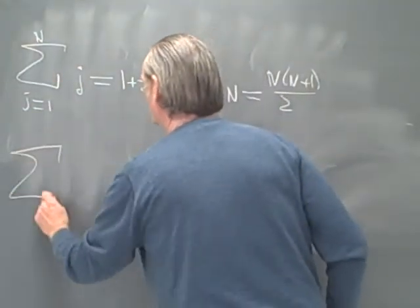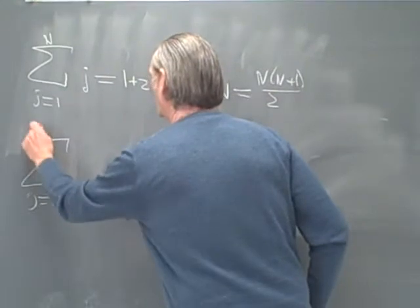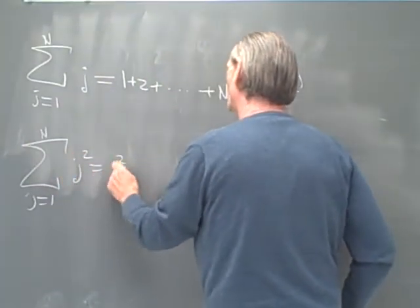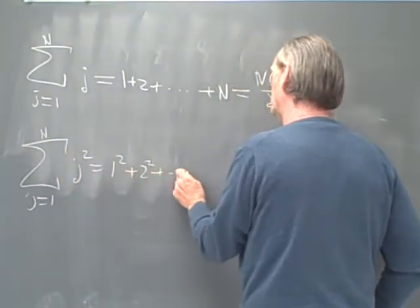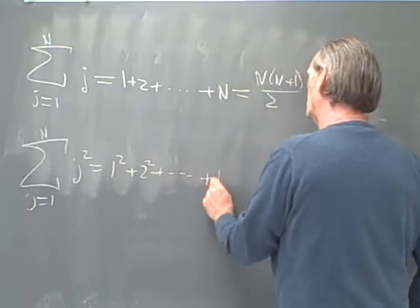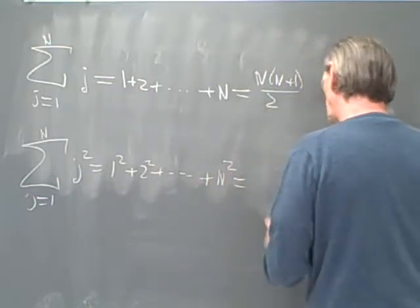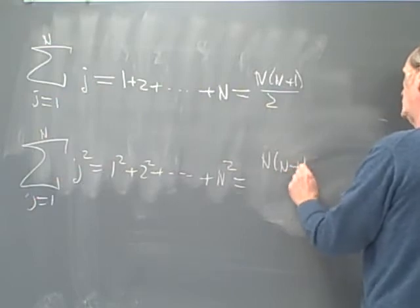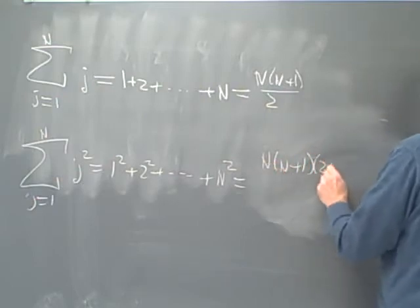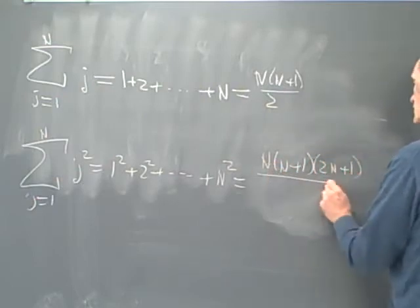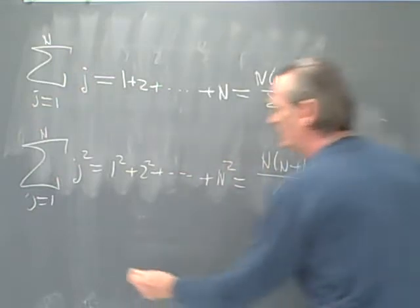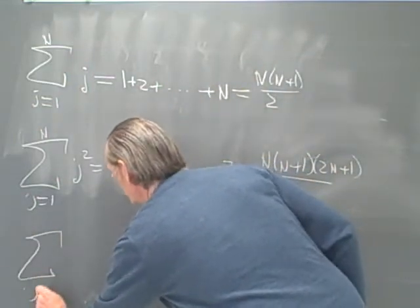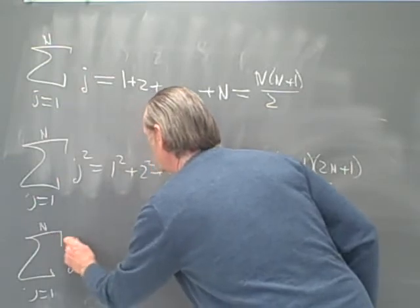We also have the sum from j equals 1 to n of j squared — that would be 1 squared plus 2 squared plus ... plus n squared — and that's going to be equal to n times (n plus 1) times (2n plus 1) over 6.